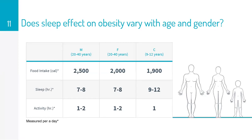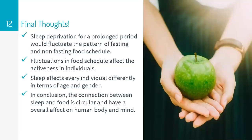Another question we are trying to answer is: does the sleep effect on obesity vary with gender and age? Data collected for adult males, adult females, and children aged 9 to 12 years considers variables of food intake, sleep, and activity per day. The sleep needed for adults is 7 to 8 hours, while children need 9 to 12 hours. Food intake for adult males and females varies by about 500 calories, and for children it is about 1,900 calories. Considering these variables, sleep effect on obesity does vary with age and gender. Sleep deprivation for a prolonged period fluctuates fasting and non-fasting food schedules, affecting individual health differently based on age and gender.